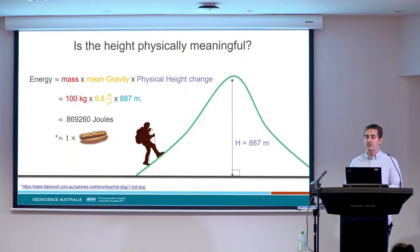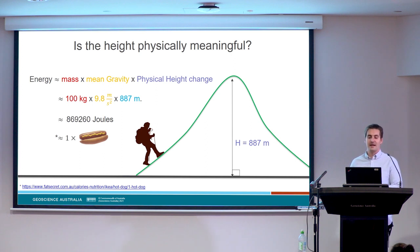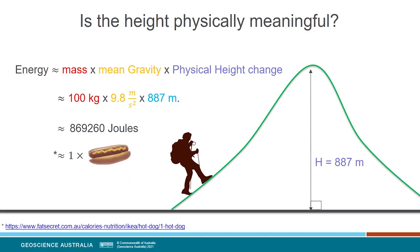What makes a height physically meaningful? Well, they're directly related to the amount of energy needed to overcome the tug of the Earth's gravity. It takes some energy to walk uphill because we have to work against the force of gravity, and we can actually calculate how much. For example, moving 100 kilograms up 887 metres to the top of Mount Majura requires around 870 kilojoules. This isn't nutritional advice, but that's about the same amount of energy in a small hot dog.